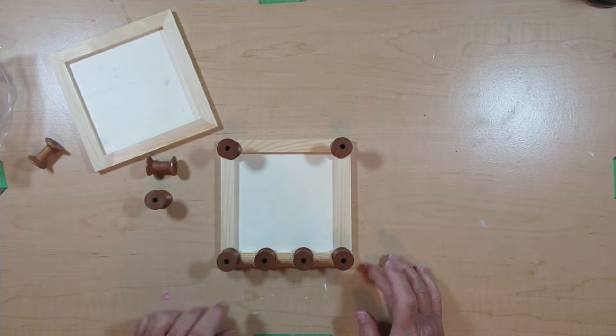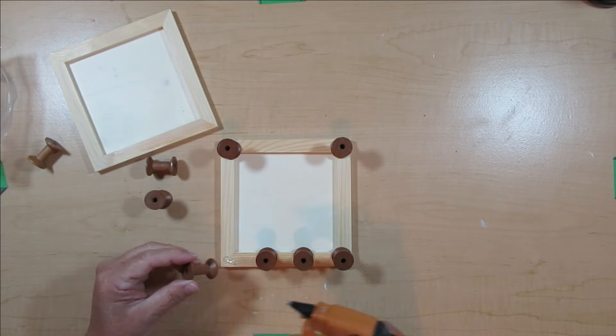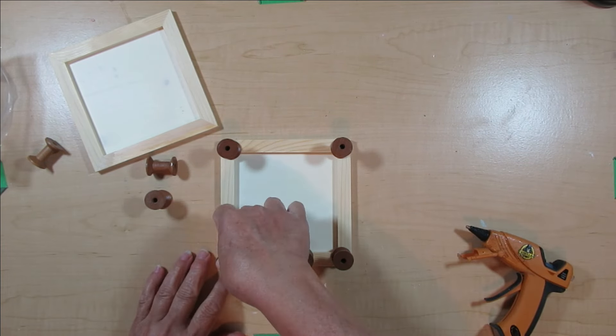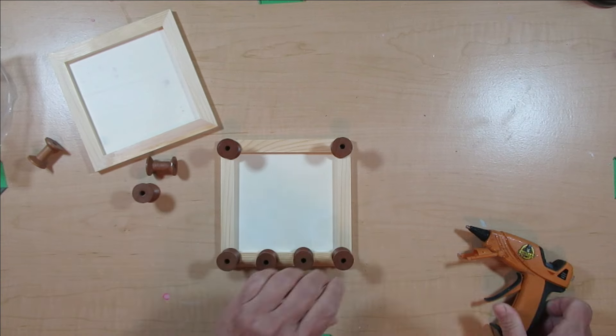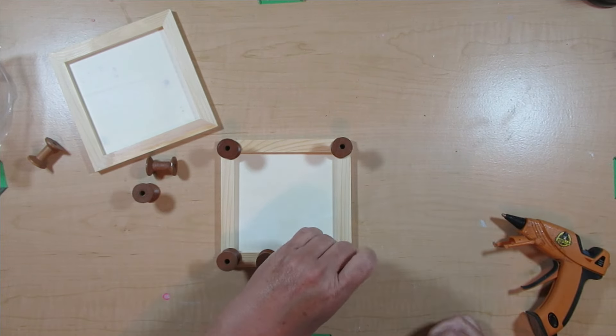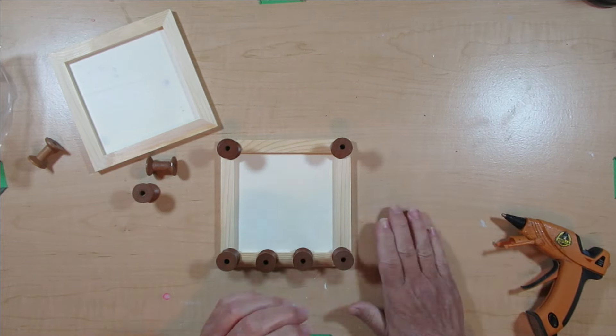I wanted to give this little riser a lot of appeal, so I'm using four of the spools on each side, one in each corner and then two in the center, and hot glue is plenty to hold these together.